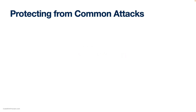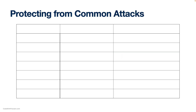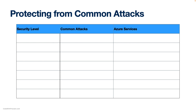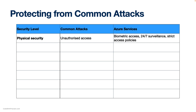Next, let us look at some ways Azure protects against common attacks and ensures the security of your application's data and infrastructure. First is about physical security. Azure data centers are protected by stringent physical security measures, including biometric access controls, 24 by 7 surveillance, and strict access policies. These measures help prevent unauthorized access to the physical premises where your data is stored.